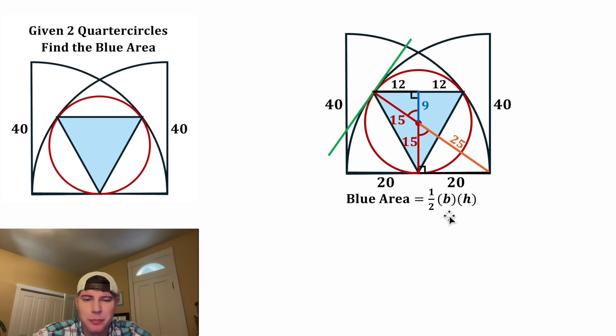The area of a triangle is one half base times height. So let's get rid of everything that's not the base or the height. And now in the place of the base, we can plug in 12 plus 12, which is 24. And then for the height, we can plug in 9 plus 15, which is also equal to 24.